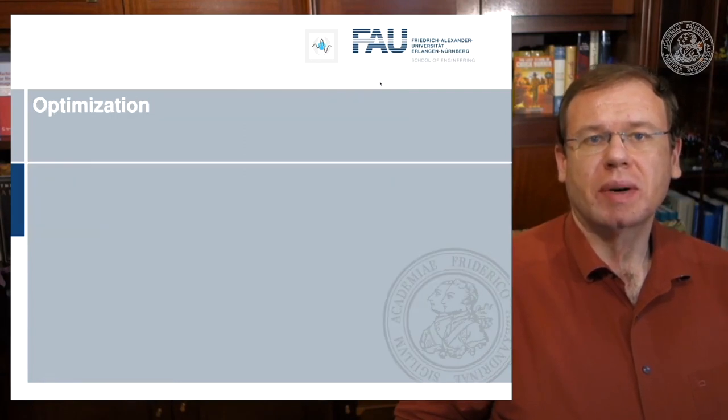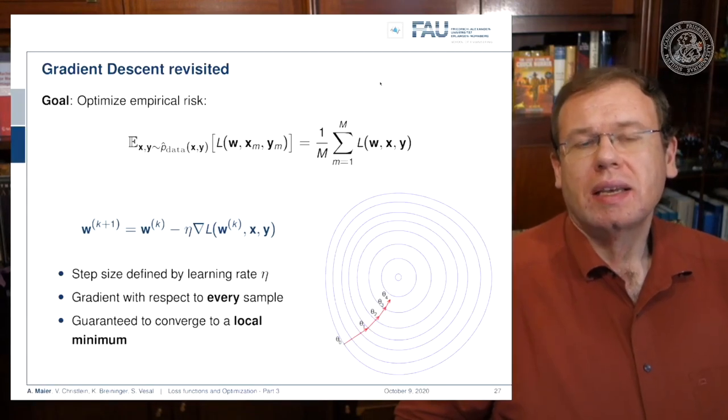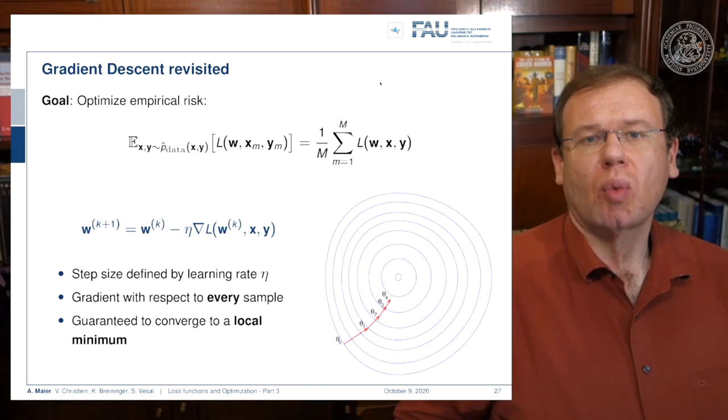We've seen that gradient descent is essentially optimizing the empirical risk. Here in this figure you see that we do one step each towards this local minimum.